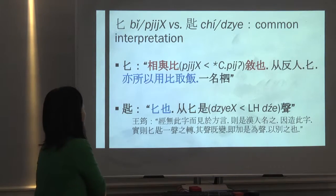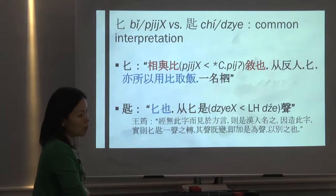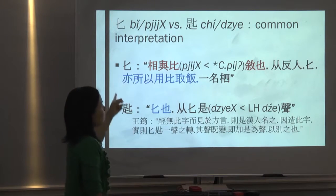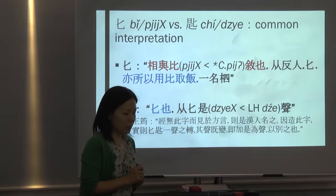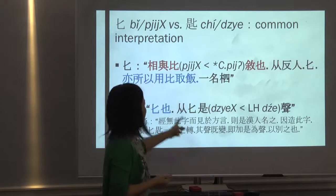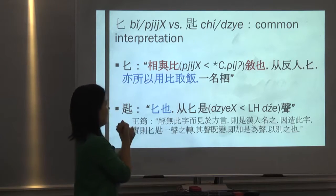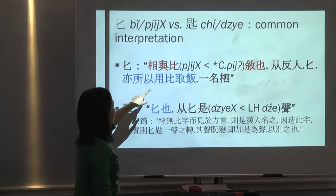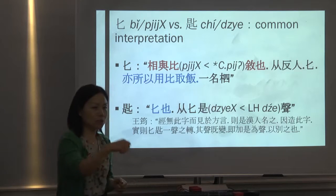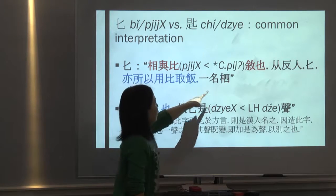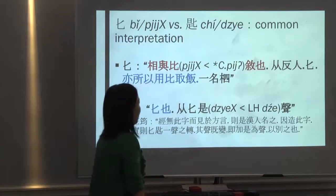The common interpretation, following the Shuowen jiezi by Xu Shen, is that bi actually has two meanings: one is 'to put against each other' — similar to bi meaning 'to compare' — and the other is the thing used to scoop rice. In this second meaning it's also called si. Guan Yucai's commentary says that the graph bi represents two words: first 'to compare,' and the other 'the spoon,' and he said that only the second meaning — the spoon — survived while the other died out.